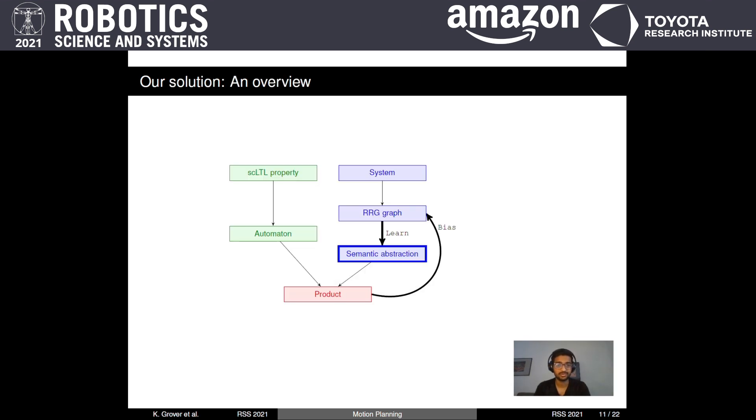A high level overview of our approach is presented here. An automaton is generated from the property and the RRG graph is built by sampling points from the environment. An abstraction is constructed on the fly including the maybe transitions.